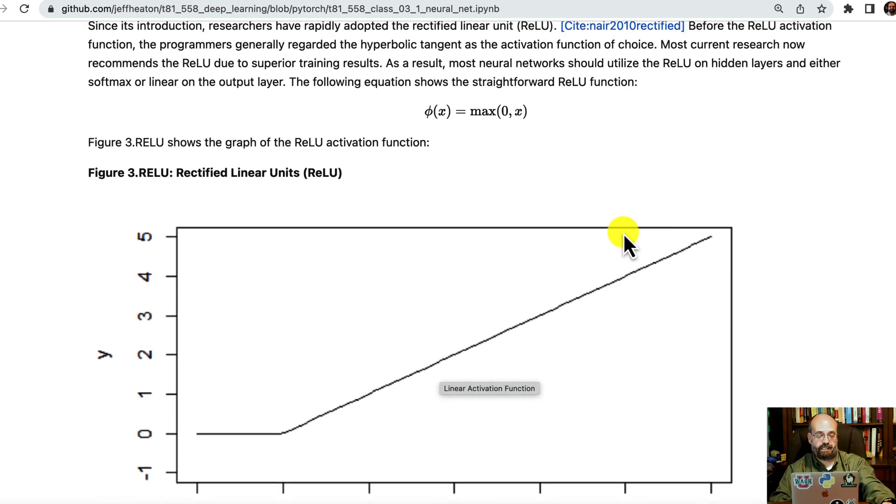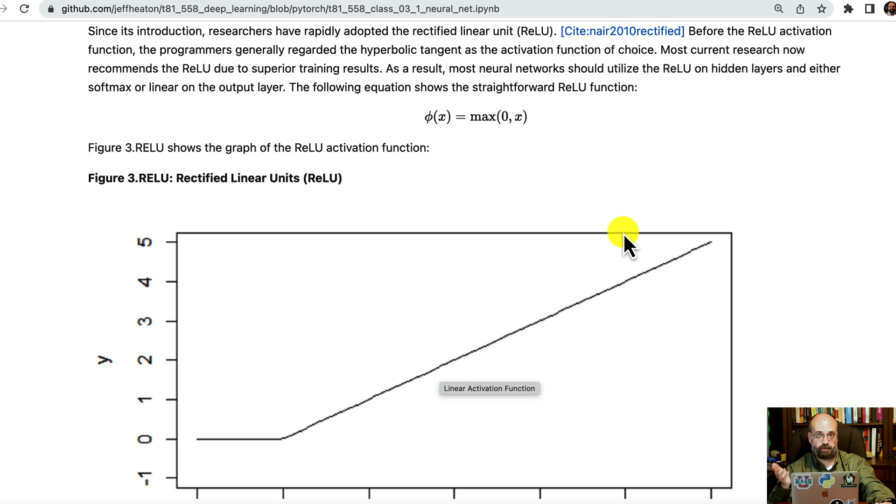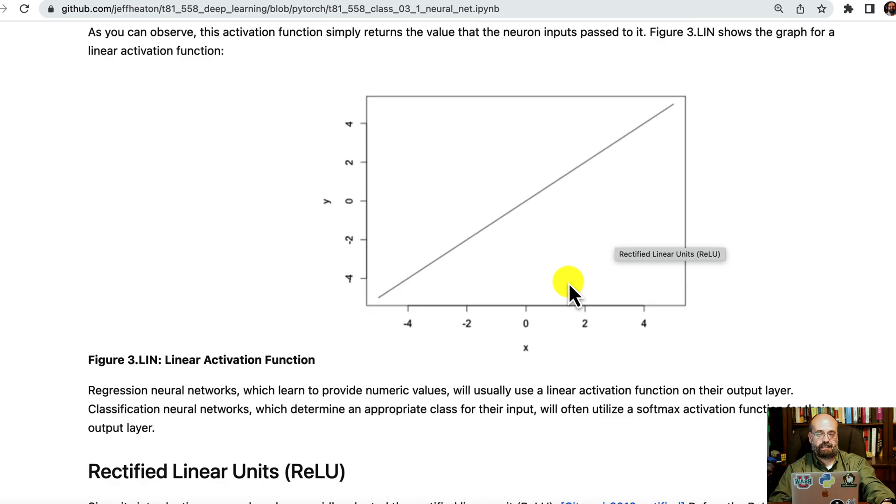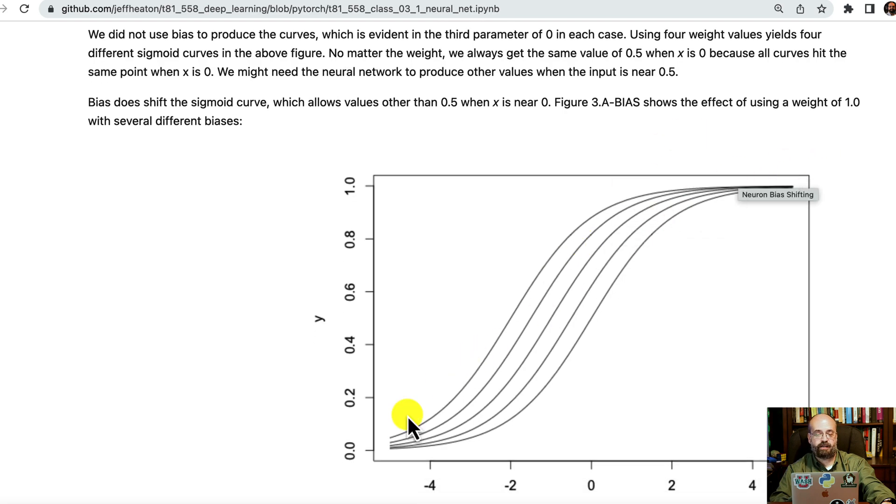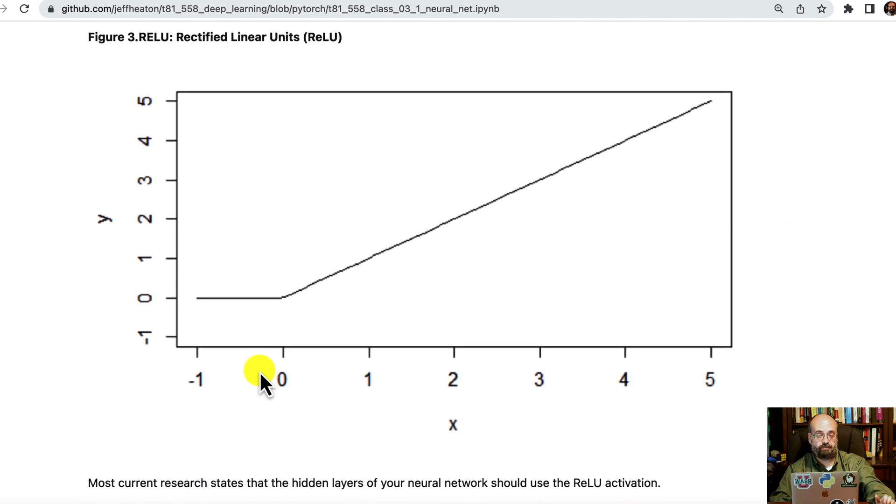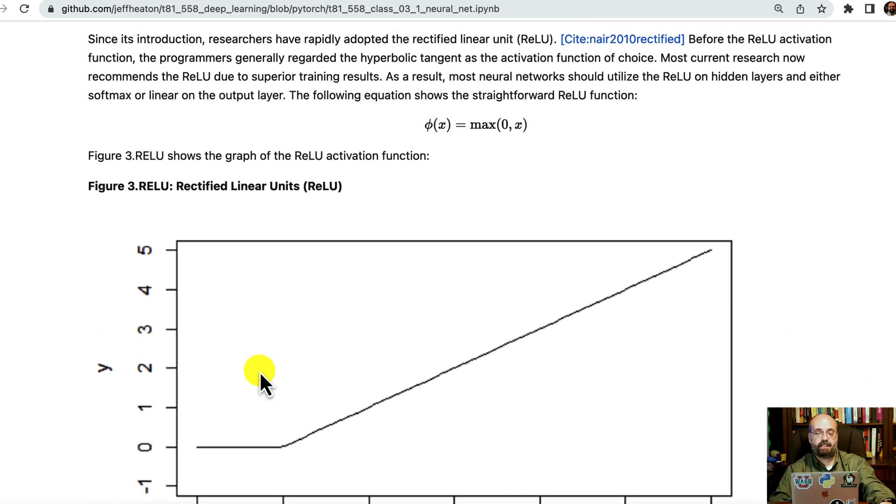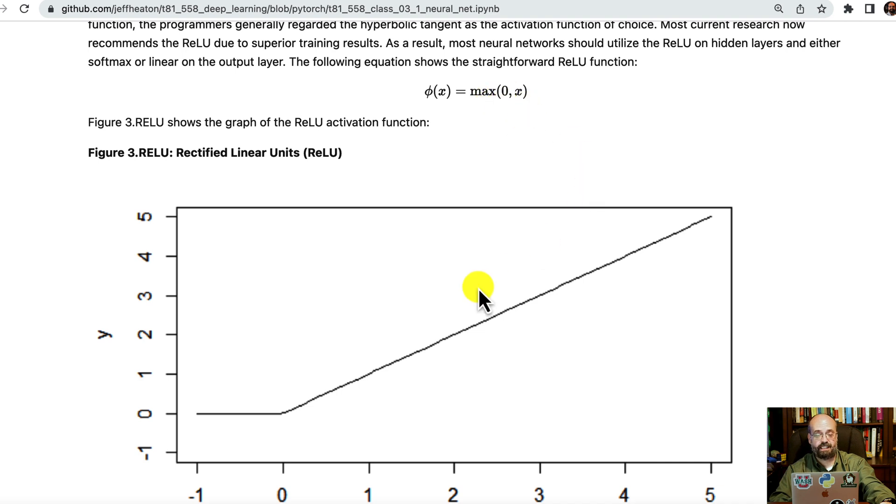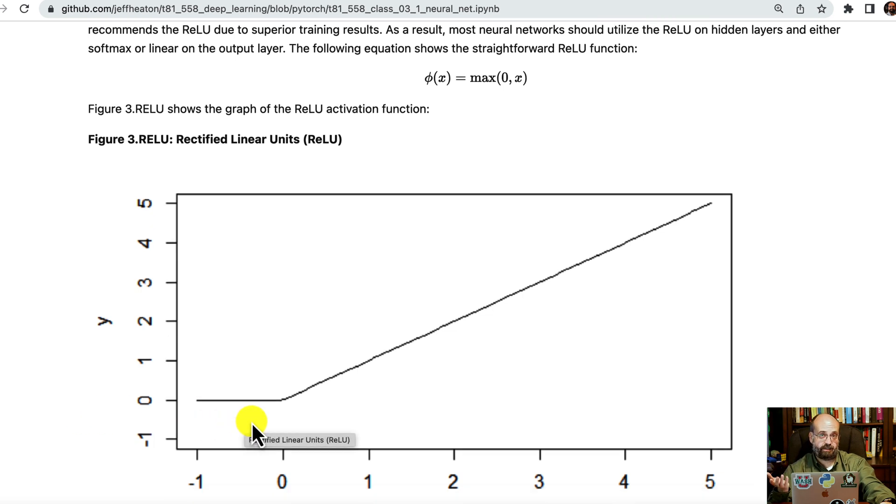Rectified linear unit is one of the advances that really helped deep learning get past the vanishing gradient problem. When we get into training, we'll see more about that, but that has to do with saturation when these go near zero. That can cause many of the neurons to drop out of training and become just simply not used. The rectified linear unit is pretty simple. It's largely a linear function past zero and then flattens out before zero. There's also the leaky ReLU, which we will see as well. Rectified linear unit activation functions are very commonly used on the hidden layers.